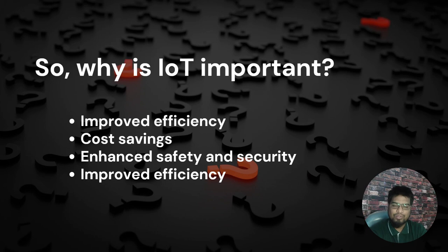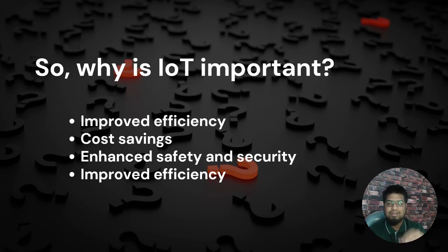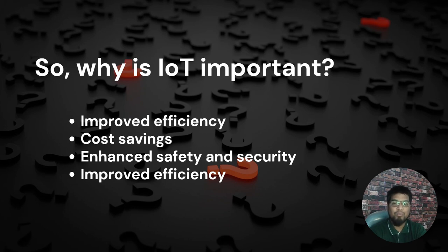IoT also helps in cost saving. By automating tasks and prioritizing what is important, you can reduce costs for businesses and consumers both. It can also help in better decision making. With the vast amount of data collected by IoT devices, it can help businesses and organizations make more informed decisions and operations.